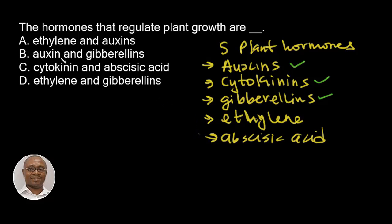So now let's go to the answer options. Option A: Ethylene — No. Auxins — Yes. So this answer option is wrong. Option B: Auxins — Yes. Gibberellins — Yes. This answer option is correct. But let's check the other answer option.